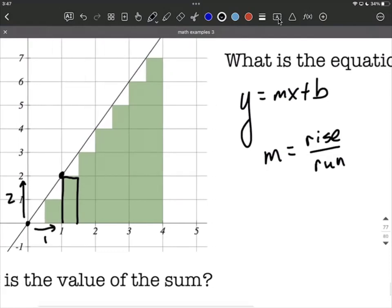So my rise component, because it's going up, is going to be a positive two. My run component, because I go to the right, is going to be a positive one. So the slope of our line is going to be two over one makes two.